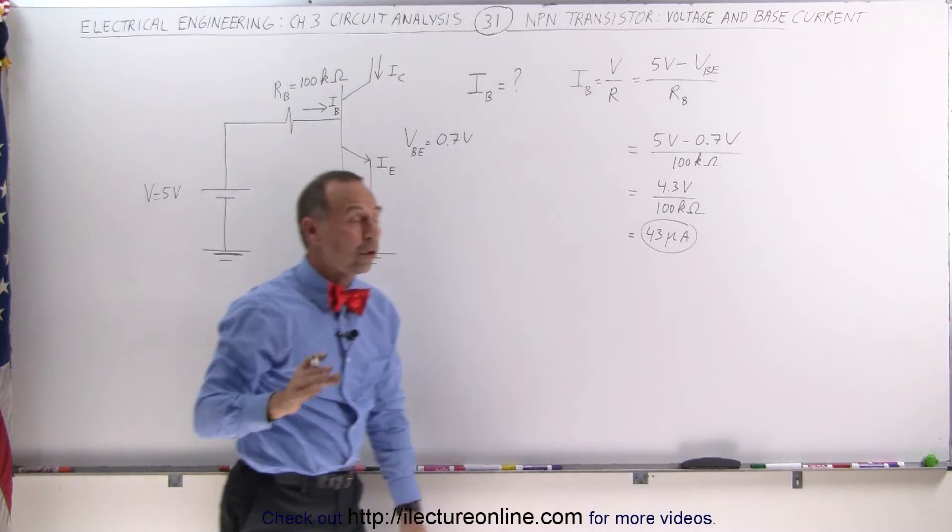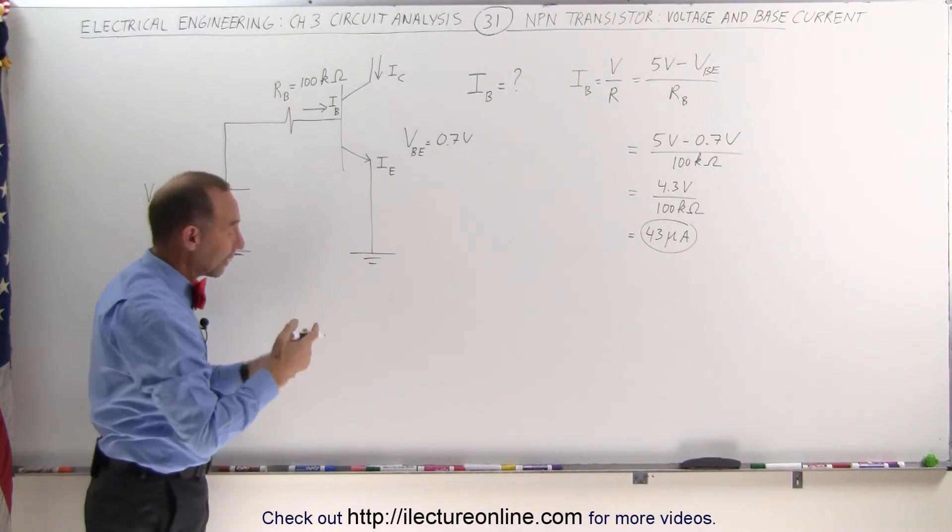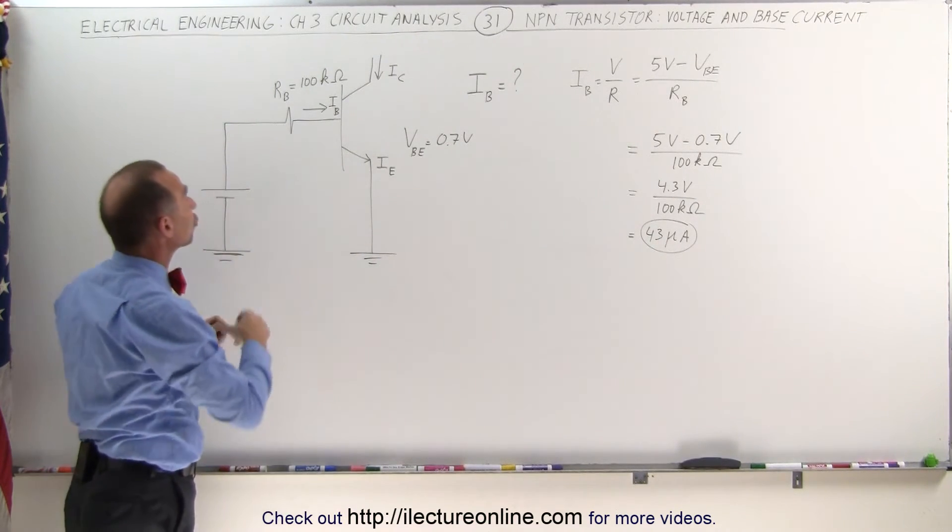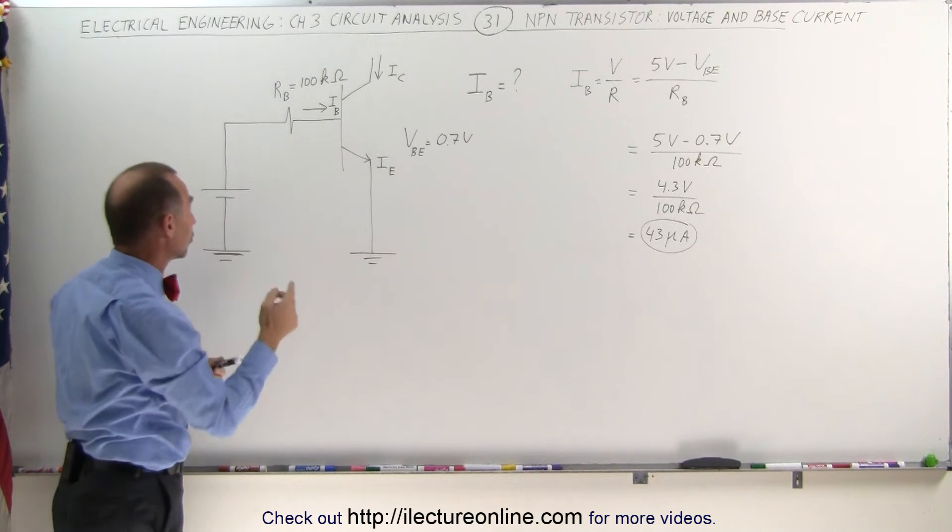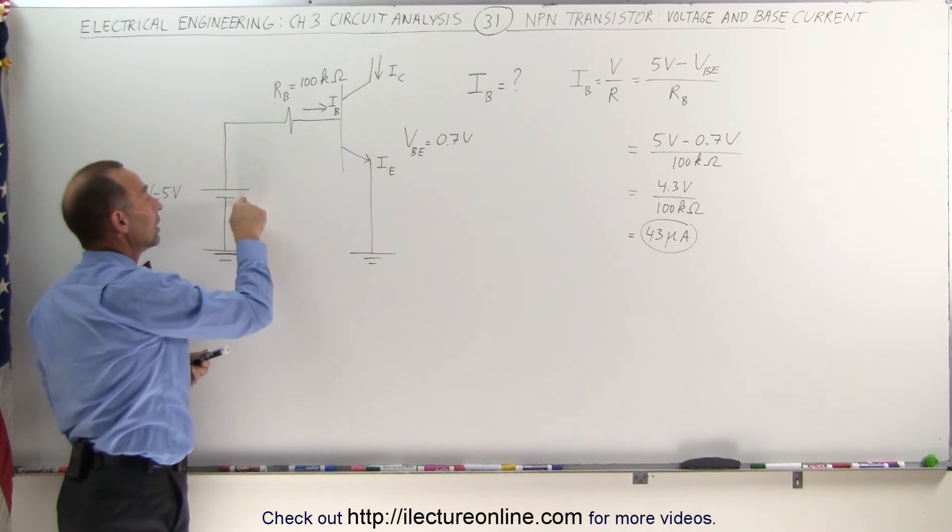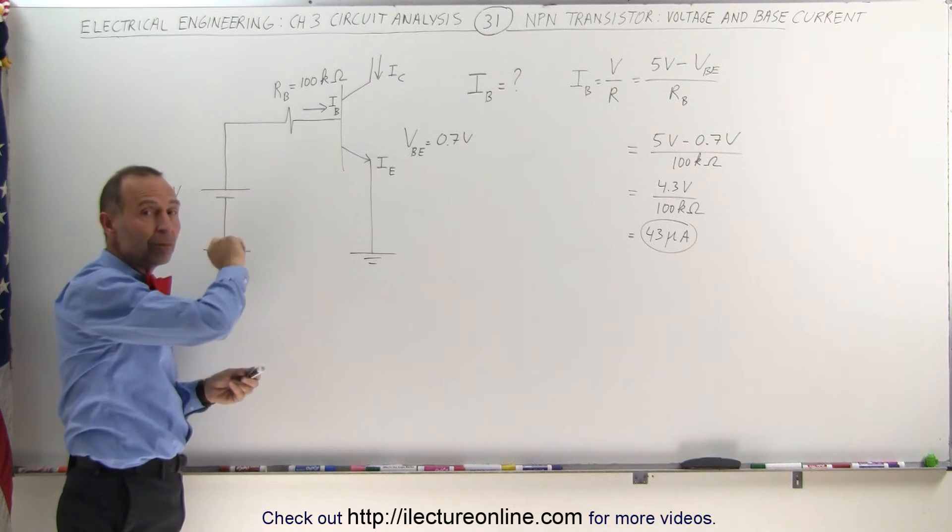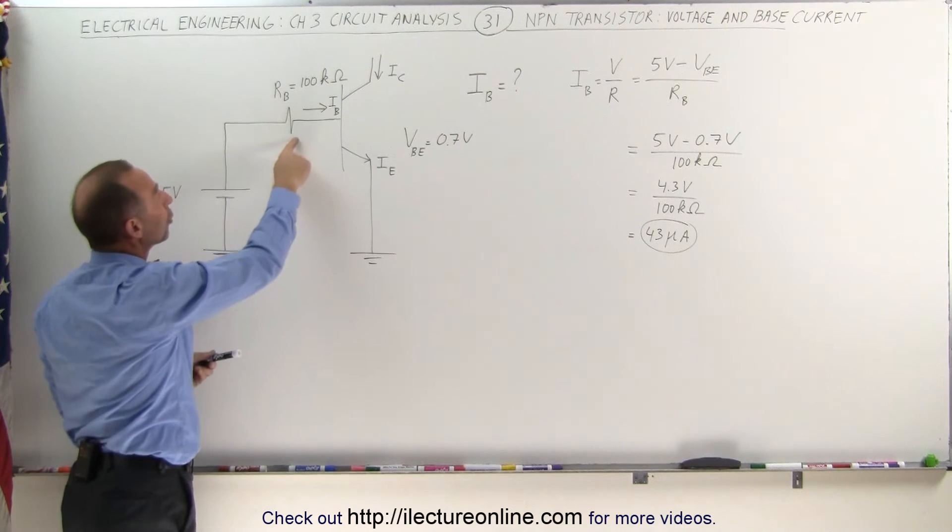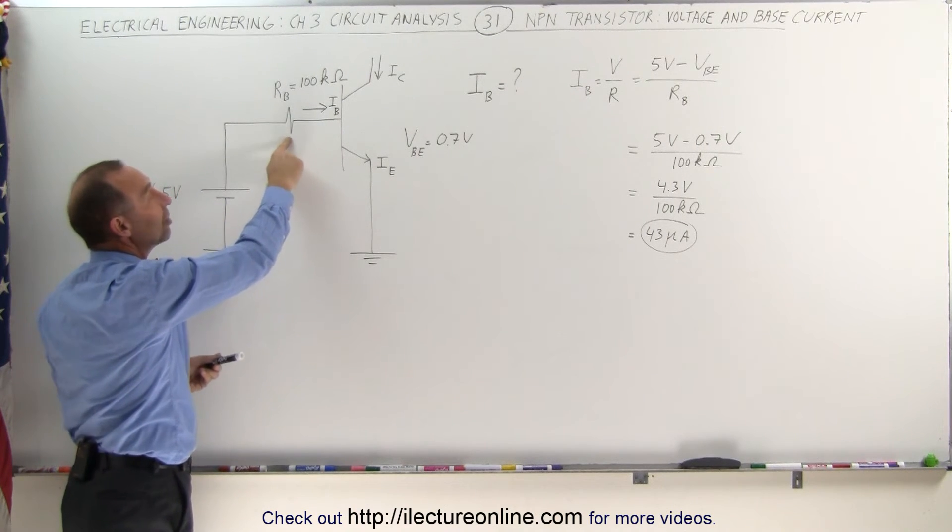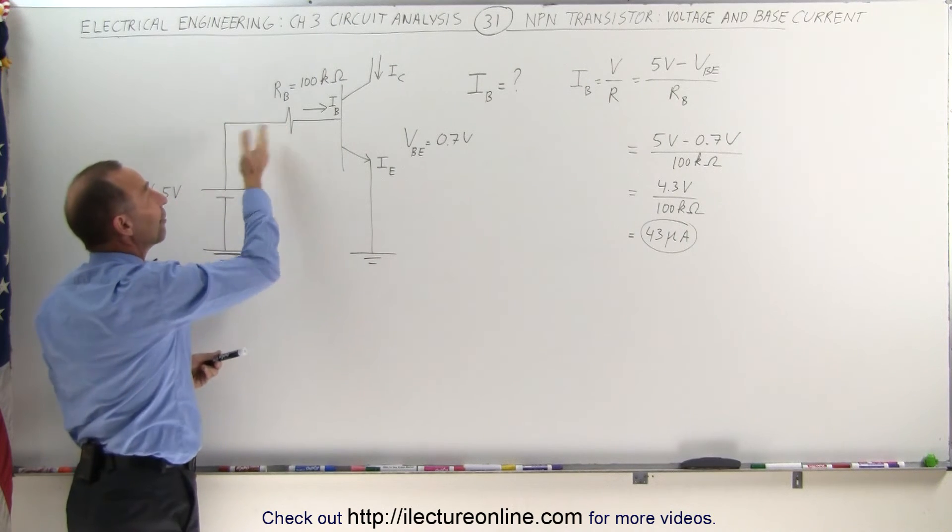Now notice also, besides understanding how to find the base current, notice that we can control the base current in two ways. We can control the base current by increasing or decreasing the voltage here, so this could be a variable voltage supply, or we could change the base current by changing the resistance if this was a variable resistor.